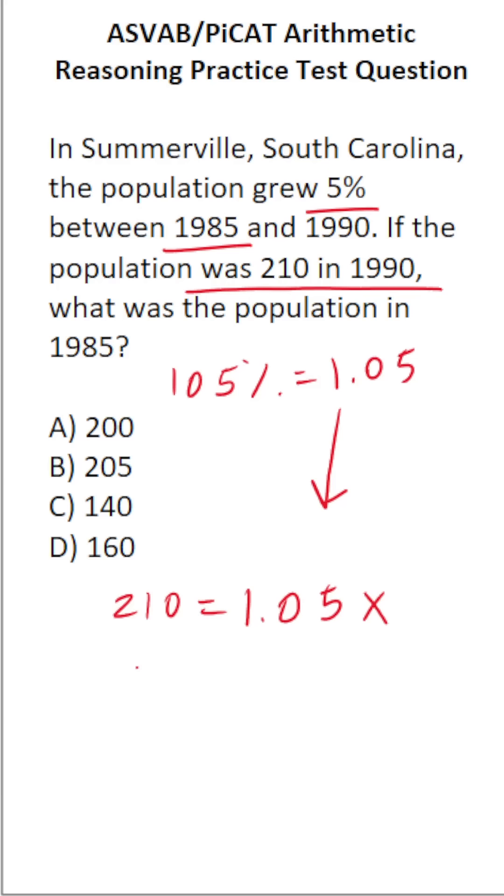So all we have to do is solve this equation for X by dividing both sides by 1.05. And we can actually do this using some simple long division if you can't do this one mentally. This says 210 divided by 1.05.